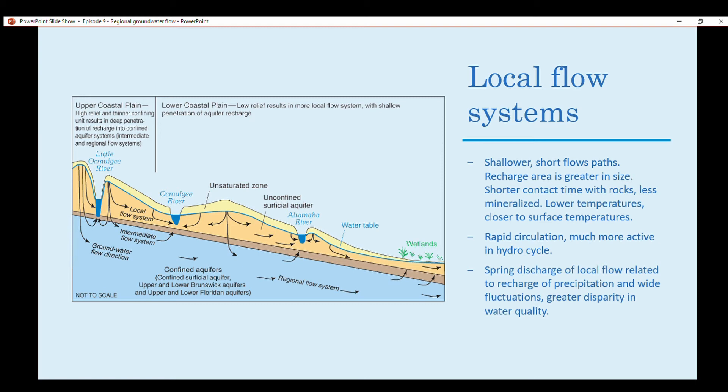Spring discharge of local flow is related to recharge of precipitation and wide fluctuations, which creates greater disparity in water quality. This is a cool little cross-section showing three different rivers, and because they're so close together, it's considered a local flow system with short paths. It reaches wetlands in this particular case from the Altamaha River. It makes its way to wetlands quicker than a regional flow system, which is shown in this confined aquifer with a confining layer.